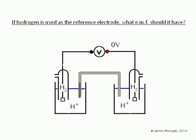So first question: if hydrogen is used as the reference electrode, and it is used as the reference electrode, what EMF should it have? And here I've drawn out a hydrogen half cell being measured against the reference electrode, which is a hydrogen half cell. So, of course, there is no potential difference and the voltage of the hydrogen reference electrode is zero volts.